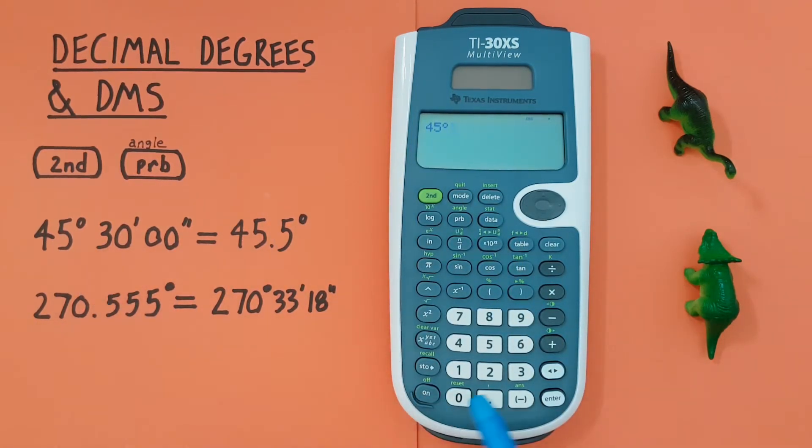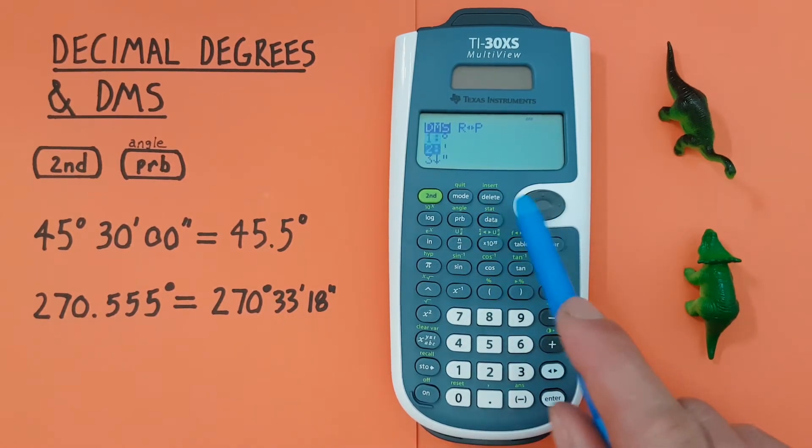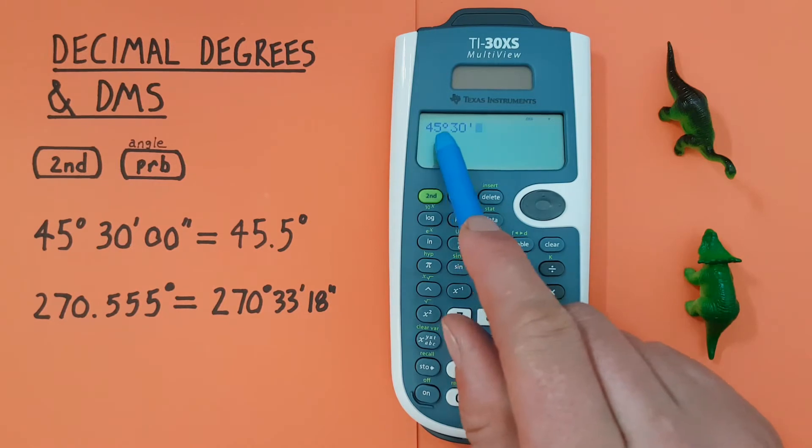Next we enter our minutes which is 30. Back to our menu and we can scroll down to 2 and press enter. There we go, 45 degrees, 30 minutes.